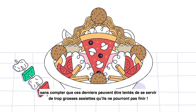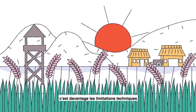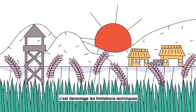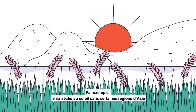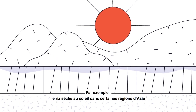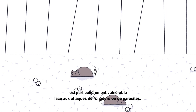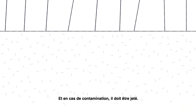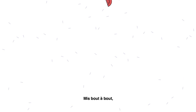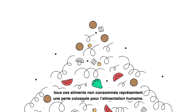In low-income countries, technical limitations and the lack of storage and transport infrastructure are often to blame. For example, sun-dried rice in Asia is particularly vulnerable to rodents and parasites, and if the rice becomes contaminated, it must be thrown away.